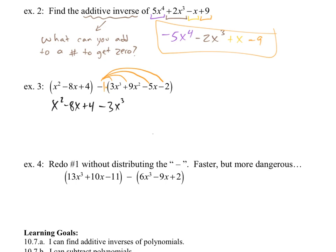My negative 1 times the positive 9 gives me a minus 9 of the x². Negative 1 times negative 5x plus 5x. Negative 1 times negative 2 plus 2.